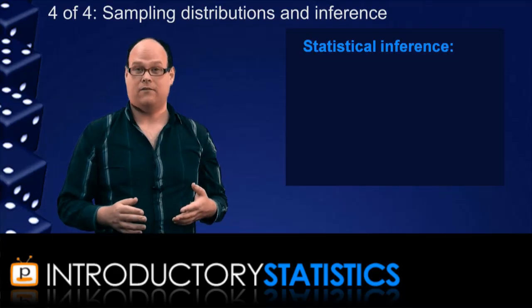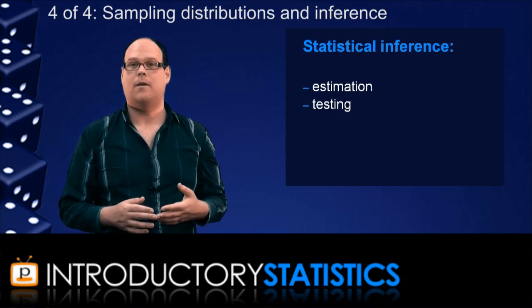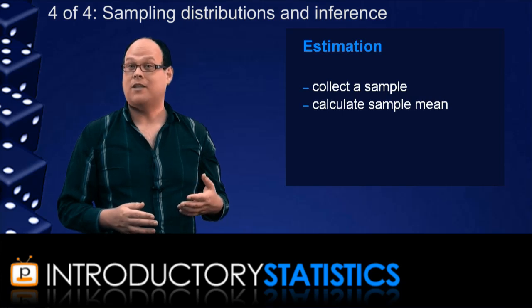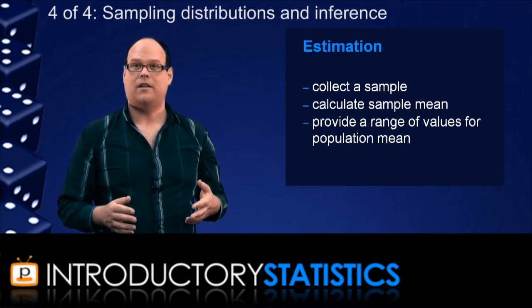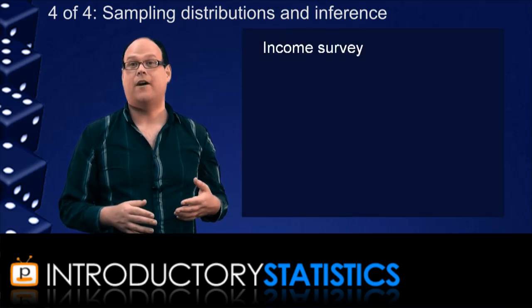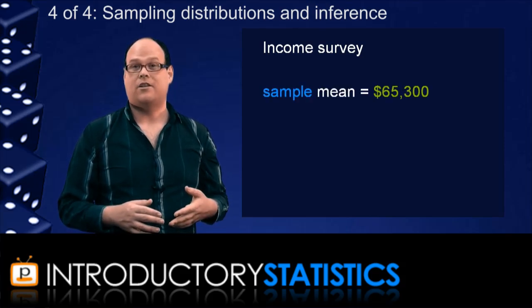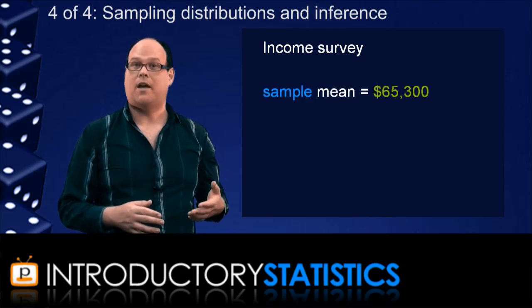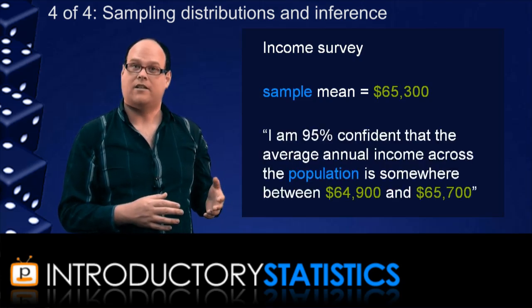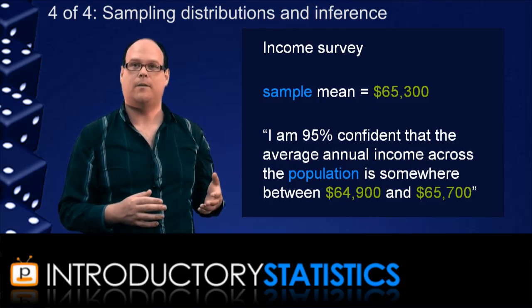Now there are two major fields in statistical inference, estimation and testing. Both of these fields extend the idea in the example we were just talking about. In estimation, we collect a sample and calculate a sample mean, and then based on what the sample mean is, we provide an interval of values that we claim contains the population mean. For example, a statistician might run a survey on income and find the average annual income in the sample to be $65,300. The statistician might then go on to publish a result about the population that looks something like the one shown here. This is an estimation in statistical inference. We calculate a sample statistic and use that one value to estimate a range of values for the population parameter.